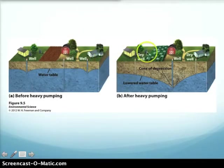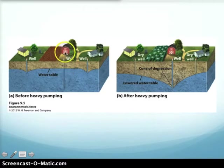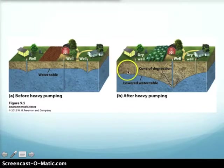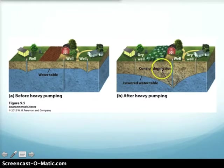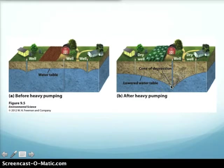Under normal, sustainable conditions the water table stays relatively stable — as long as water isn't drawn out faster than it's recharged by rainfall percolating through porous rock and soil. However, if a deep well pumps water out faster than recharge occurs, it can draw the water table down significantly. This creates a cone-shaped area of lowered water table called a cone of depression.